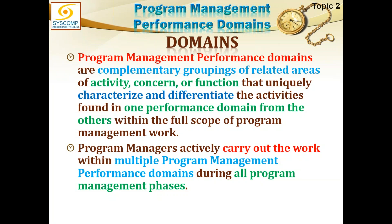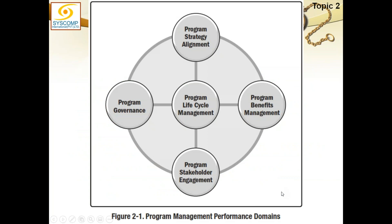Program managers actively carry out work within multiple performance domains during all program management phases. While the program life cycle is ongoing, you are simultaneously working on all five domains. At the heart is program life cycle management, surrounded by program strategy alignment — a continuous responsibility from the beginning of the program to keep checking alignment with organizational strategy.